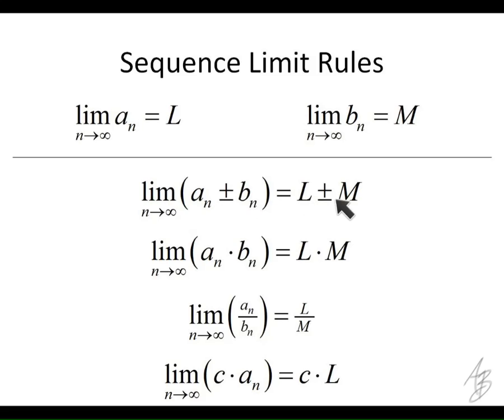If we multiply a sub n times b sub n, then the limit is going to be L times M. If we divide them, then we divide the limits.